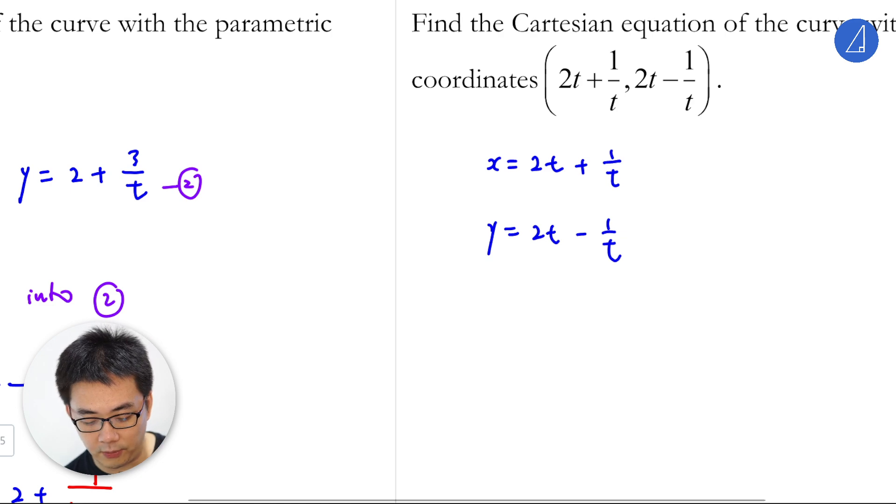What you need to do is you have two terms of t. One is a reciprocal of t and one is a multiple of t. You want to get rid of, you want to make t the subject, that's the main thing.